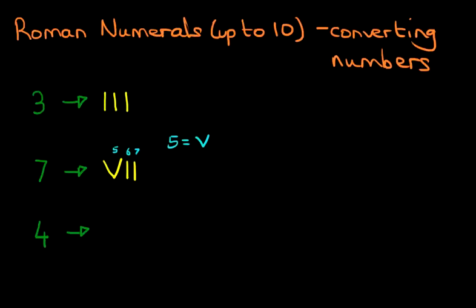Now don't forget, the numbers up to 3 are all done with capital I's as we've said. But with number 4, we have to write down 1 before 5. So we do not write down 1, 2, 3, 4. This is incorrect.